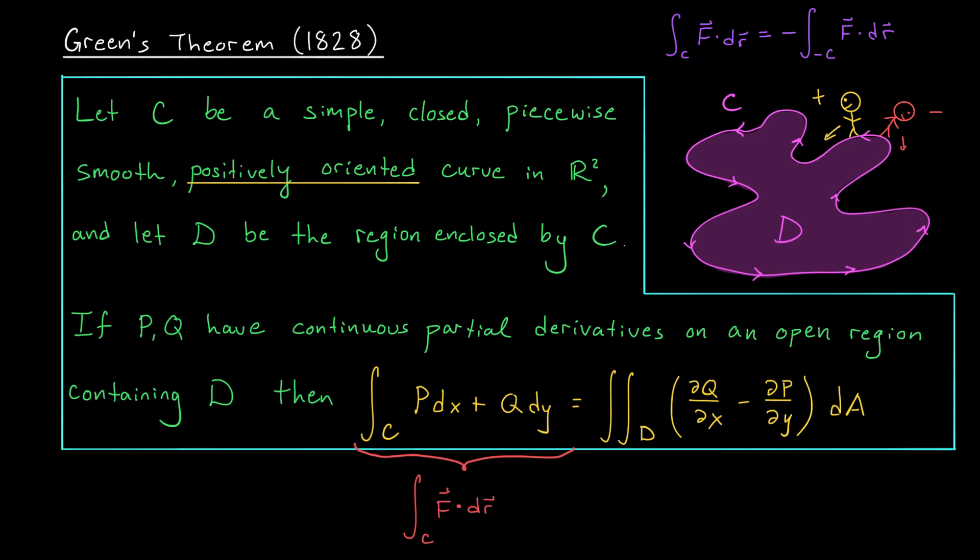Before moving on, however, I'd like to make an important comment. We've already generalized the fundamental theorem of calculus in one way to the fundamental theorem for line integrals. Now we're generalizing it in a different way to get Green's theorem. So how do these generalizations compare? Well, first of all, the fundamental theorem for line integrals only applies to conservative vector fields. Green's theorem does not include that assumption. So Green's theorem is a bit more general in that regard.